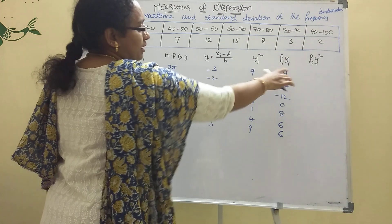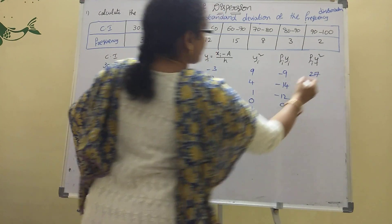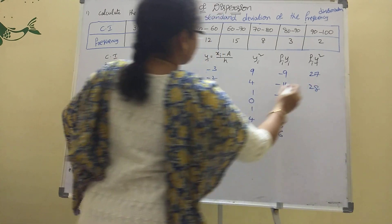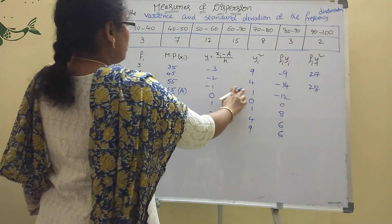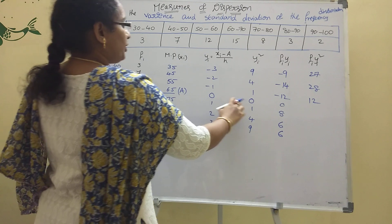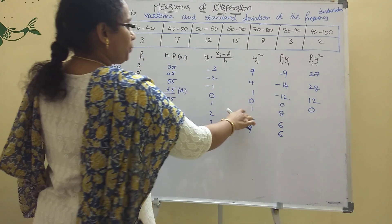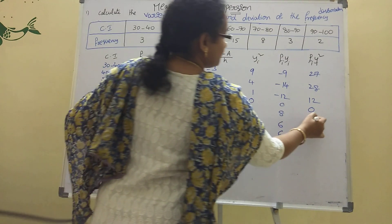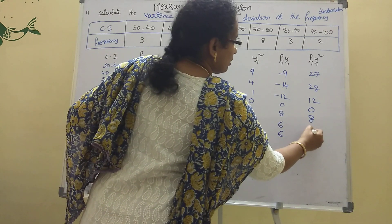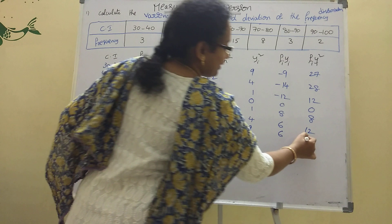For the fi·yi² column, multiply fi by yi². So: 3 × 9 = 27; 7 × 4 = 28; 12 × 1 = 12; 15 × 0 = 0; 8 × 1 = 8; 3 × 4 = 12; 2 × 9 = 18.